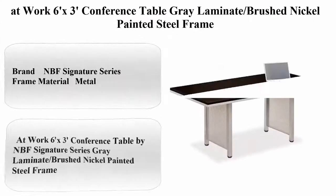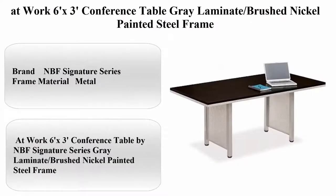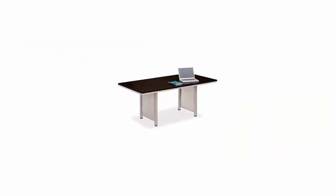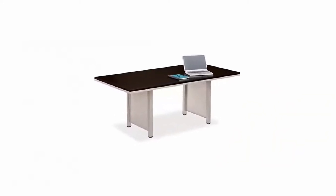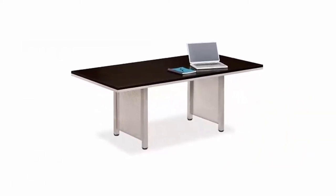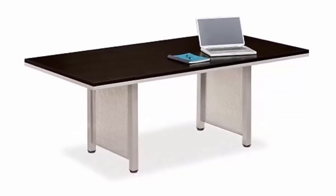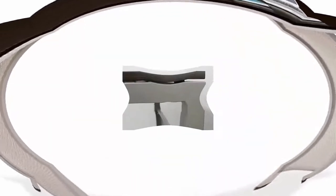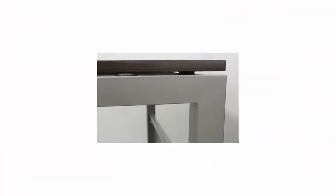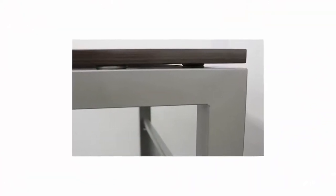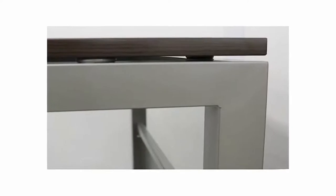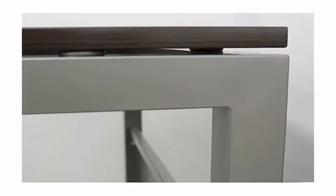At work 6x3 feet Conference table. Gray laminate brushed nickel painted steel frame. Material: alloy steel. Base type: legs. Assembly required: Yes. Brand: NBF signature series. Frame material: metal. About this item: At work 6x3 feet Conference table by NBF signature series. Gray laminate brushed nickel painted steel frame. Top 10: